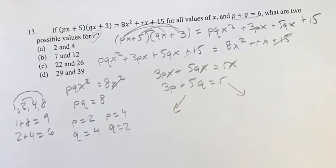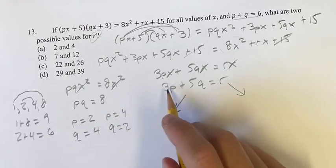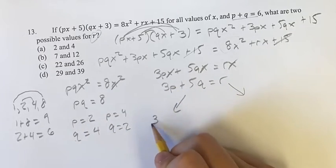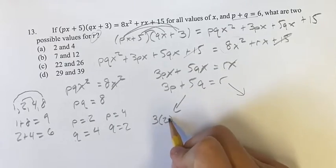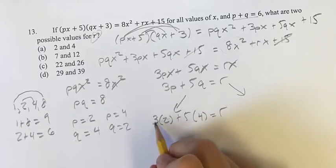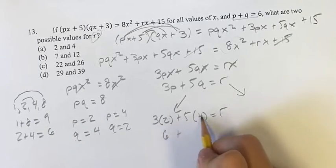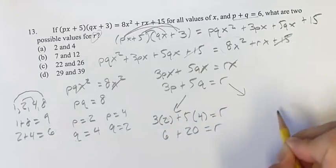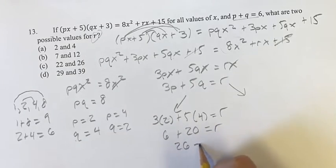So let's say p is 2 and q is 4. What is r going to be? So 3p plus 5q in this situation is going to be 3 times 2, plugging in 2 for p, plus 5 times 4, and that's going to be equal to r. 3 times 2 is 6, plus 5 times 4 is 20, equal to r. 6 plus 20 is equal to 26, and that's going to be one of our values of r. You might notice that 26 is only in c, but we can just check the other one really quickly just to make sure.